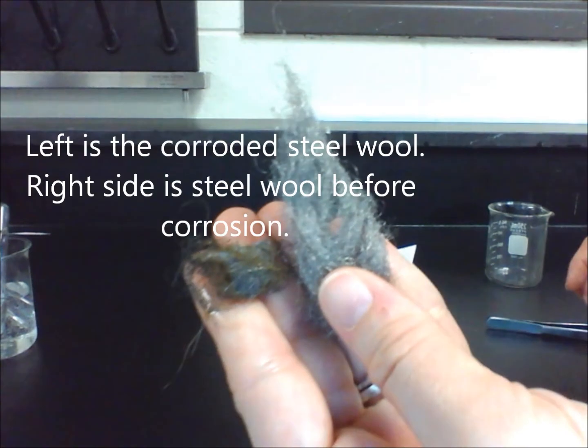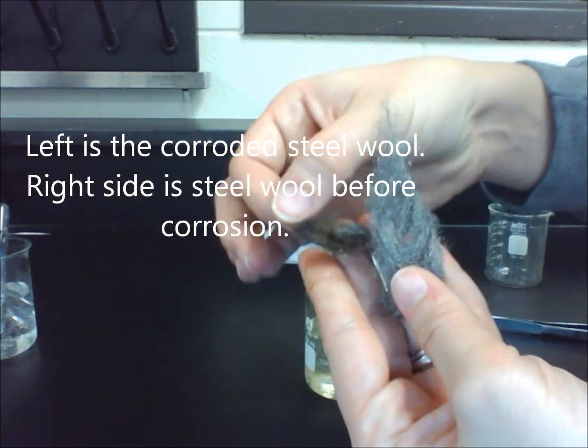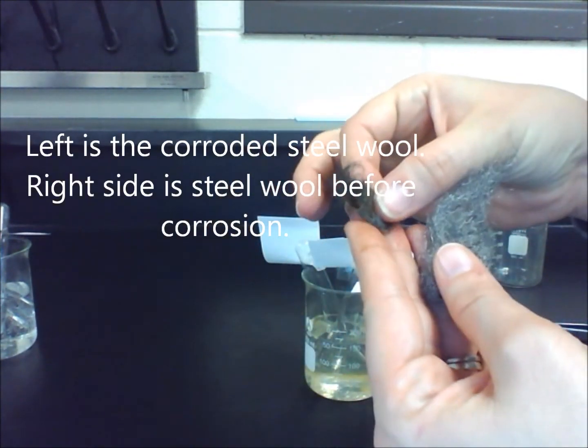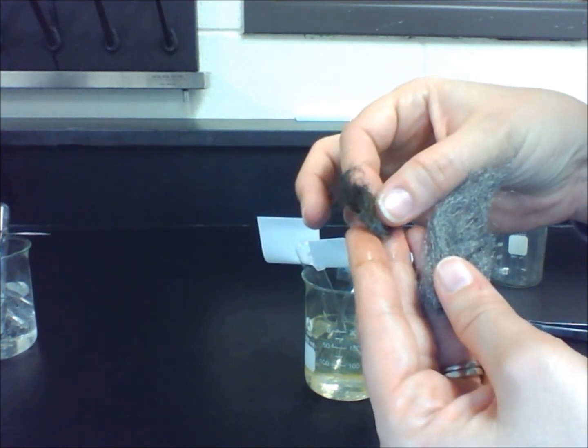The two elements that combined were oxygen and iron. Oxygen and iron were the reactants because they were what combined at the start of the chemical reaction.